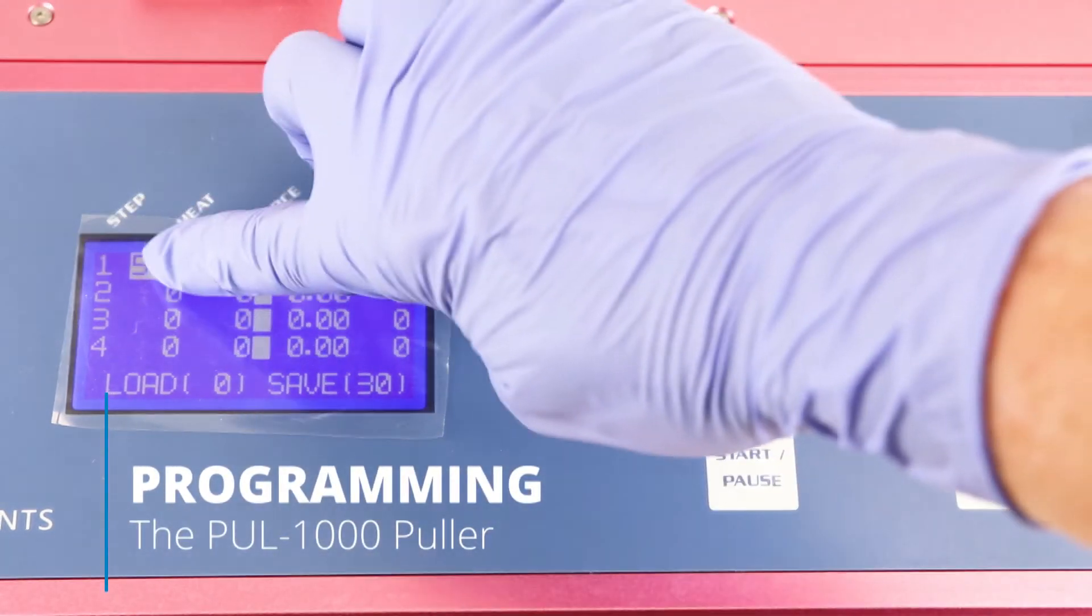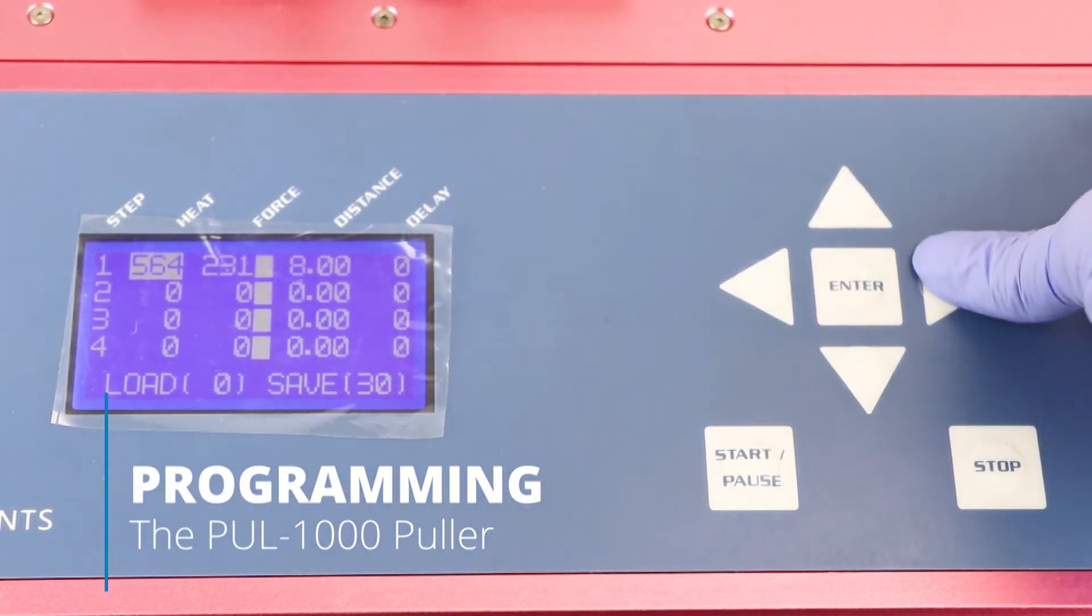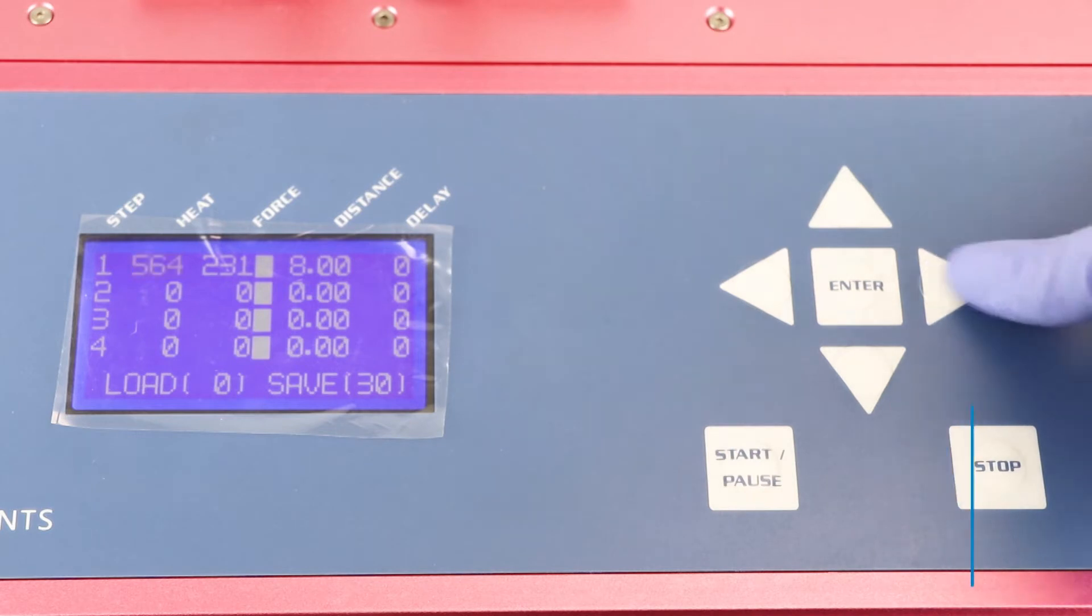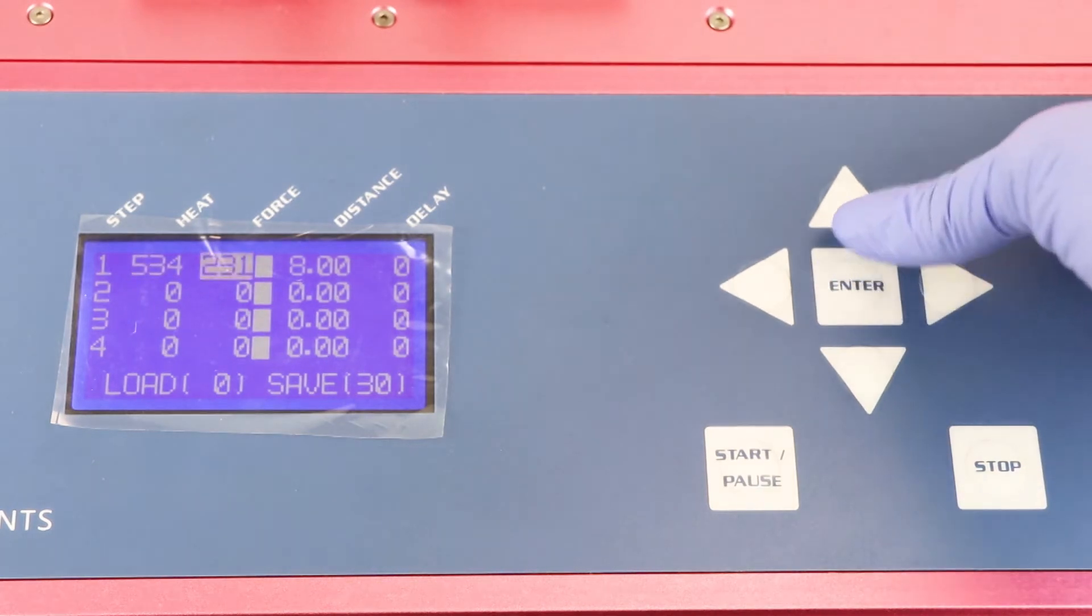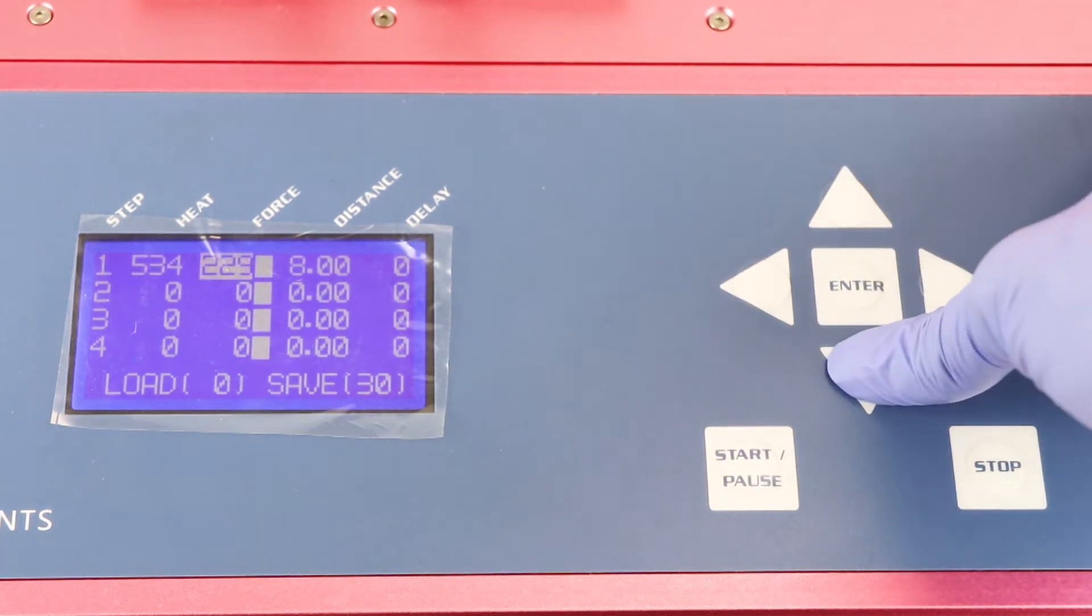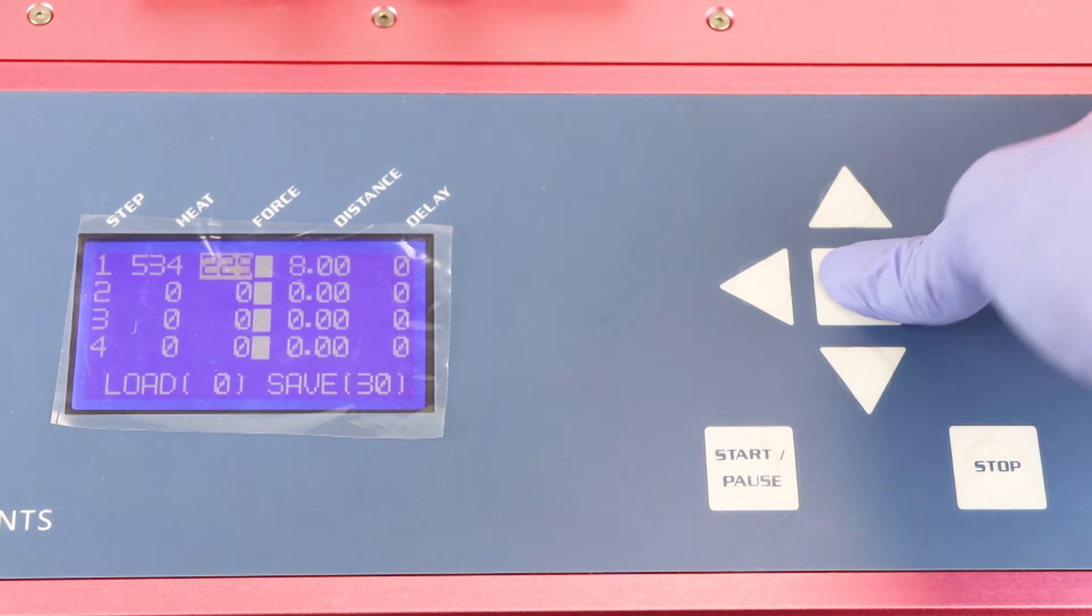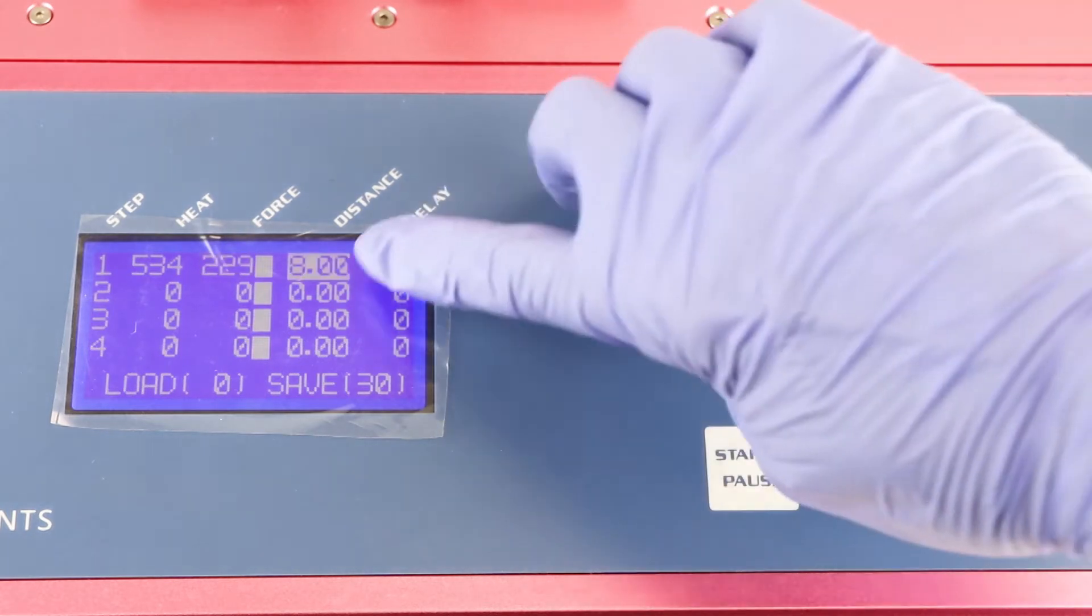The settings for a four-stage pull may be stored in memory and up to 95 programs can be permanently stored in memory. The instrument contains 15 factory-installed programs, so choose from the factory-installed program for a quick start or create your own for precise custom results.